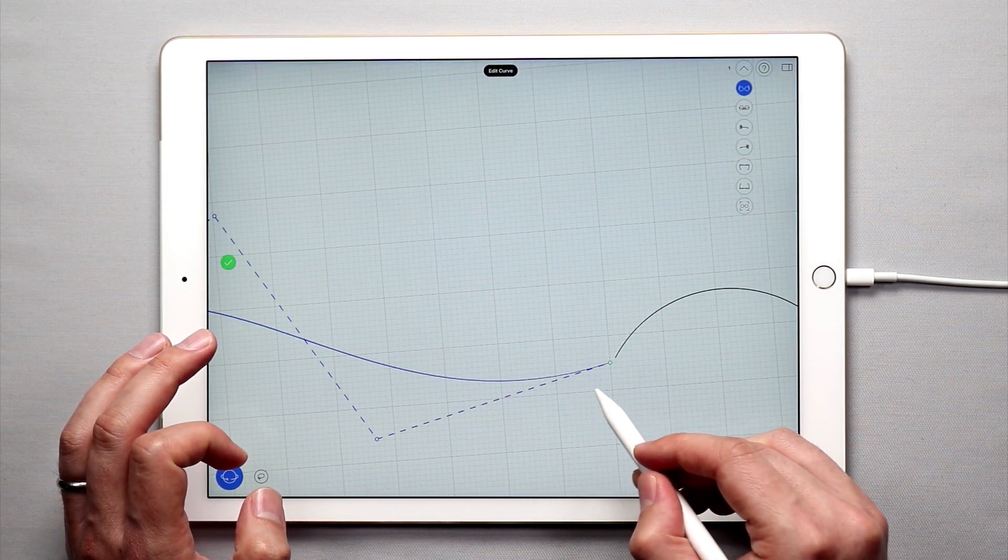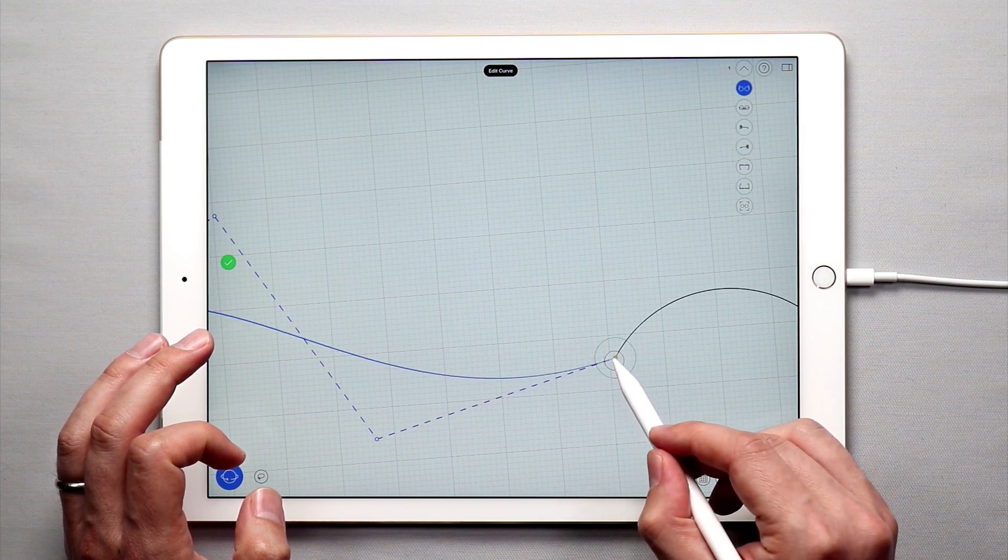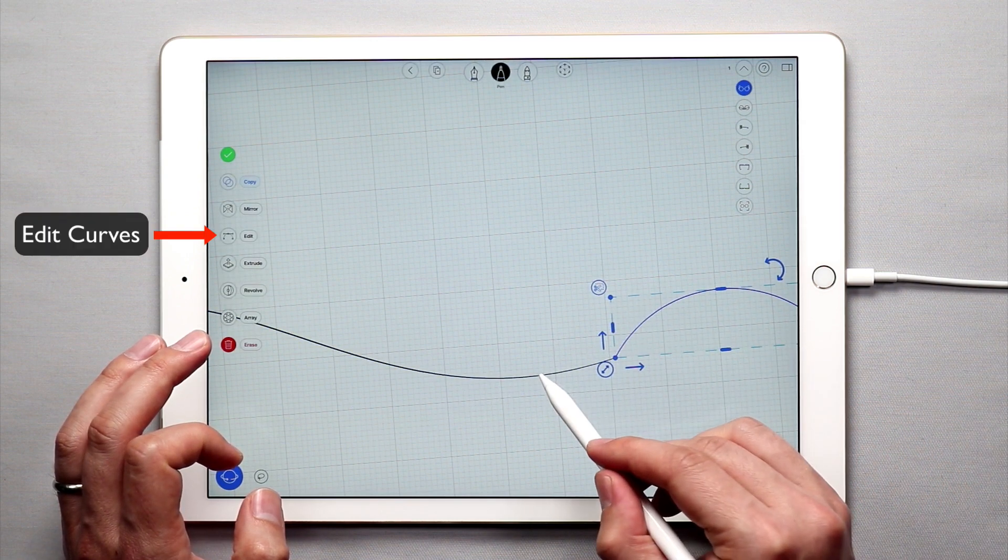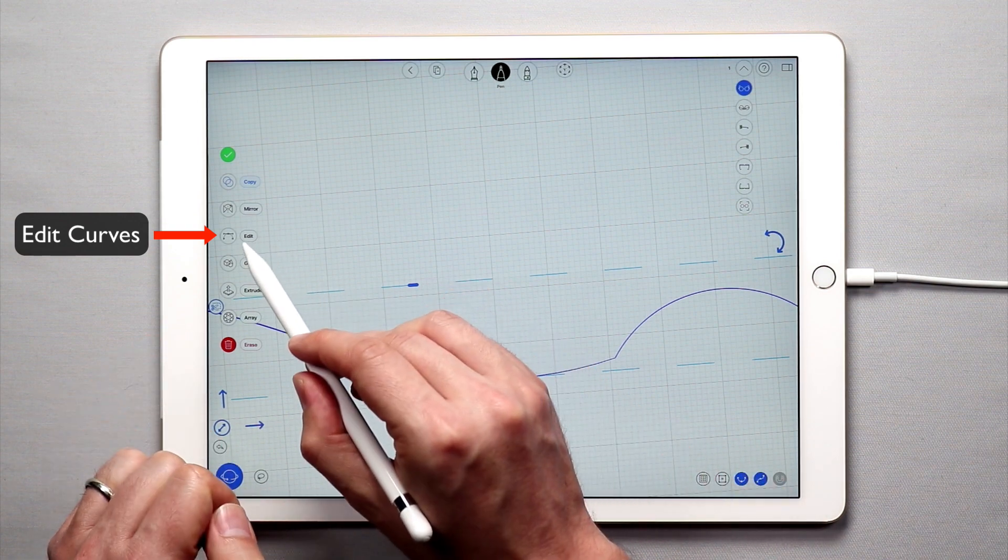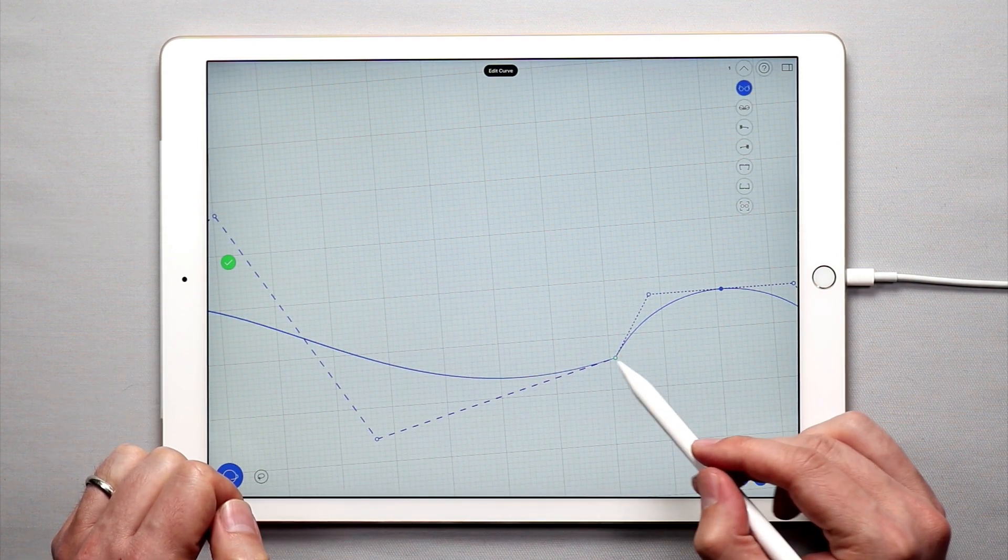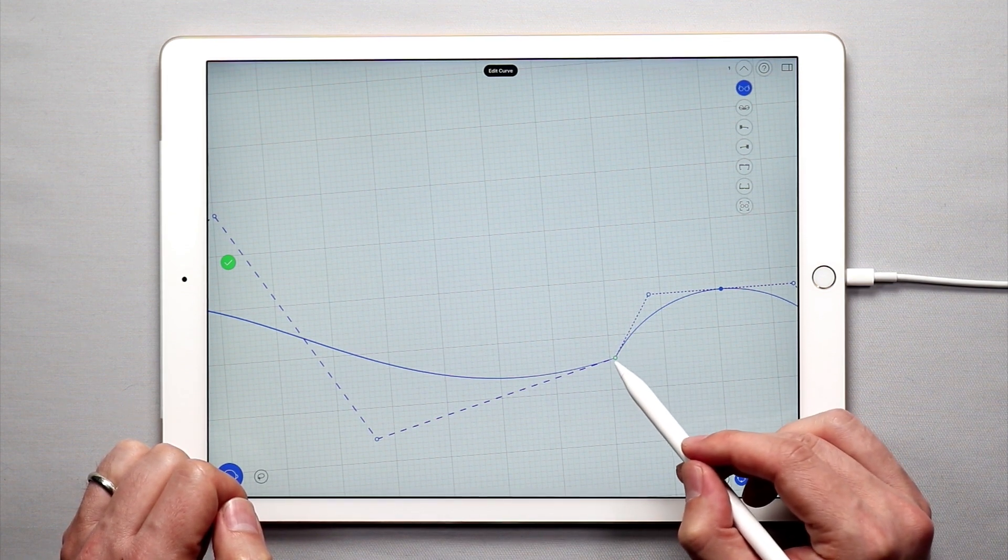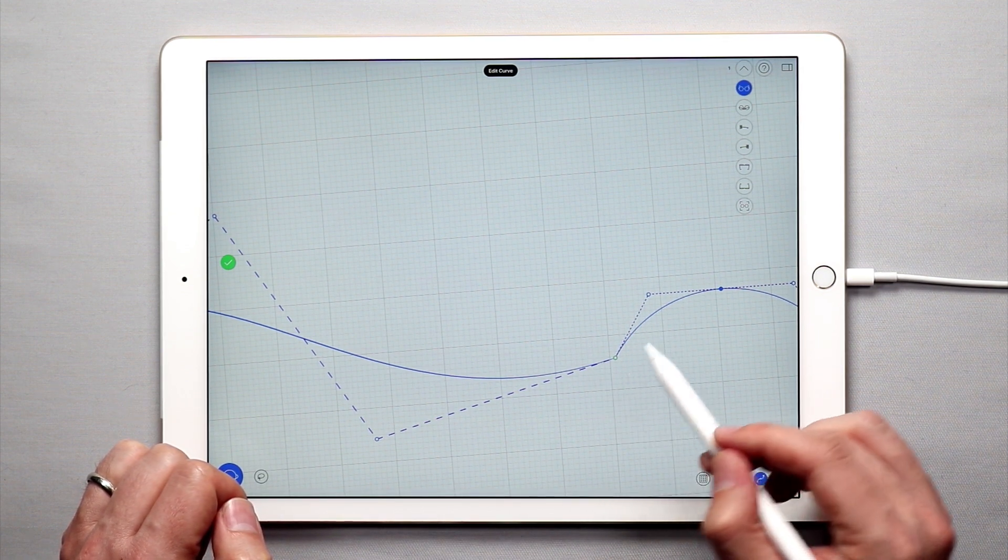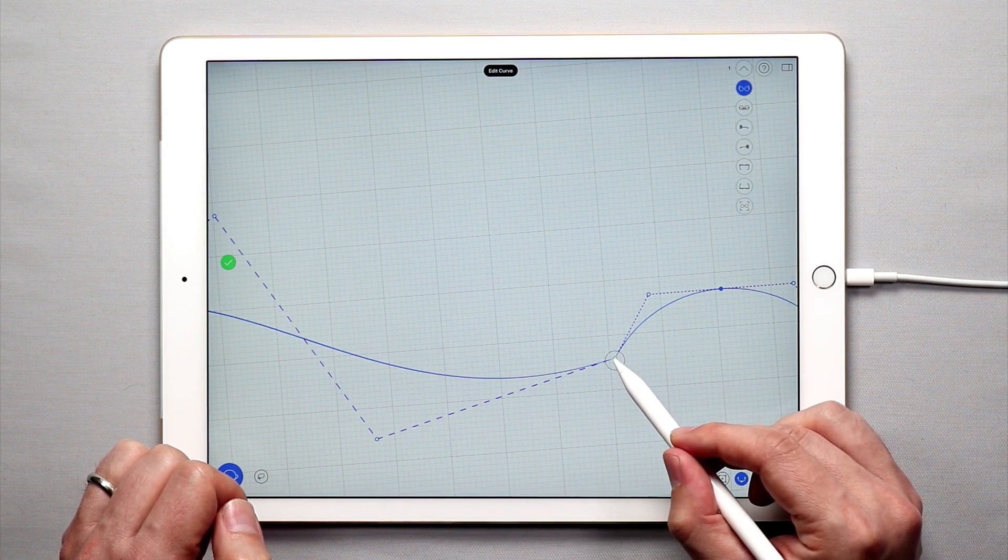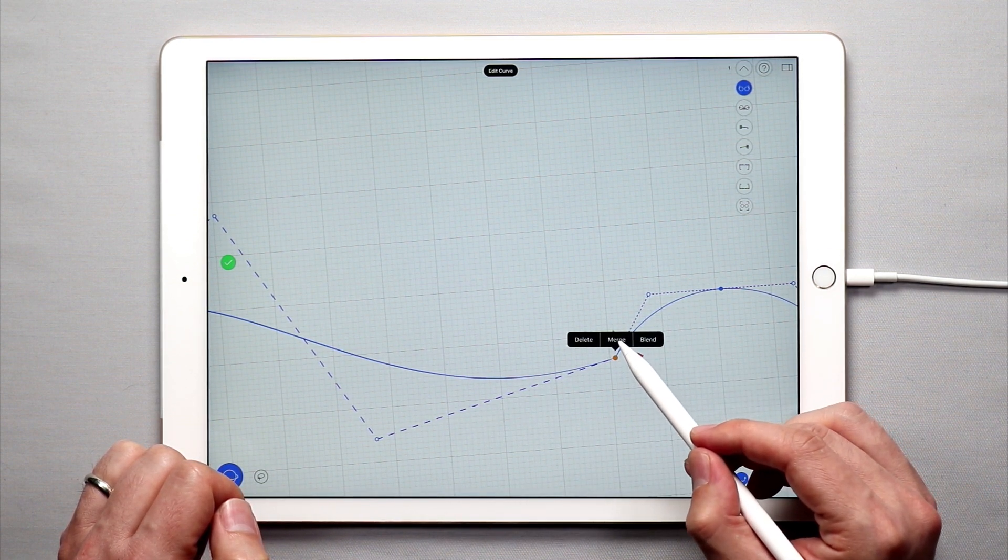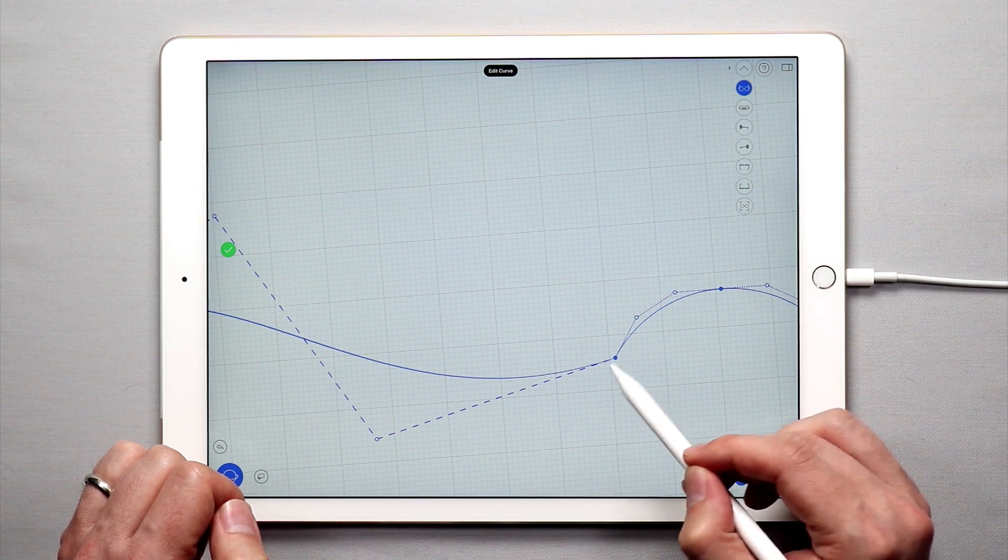If we drag this point over and then double tap on both of these curves and go into edit mode, I have the ability to connect this. Right here we have a green point that shows the end of each of these curves. If I tap and hold this, I have the option to merge it, and if I tap merge you'll see it turns blue.